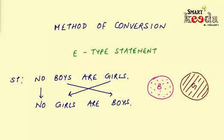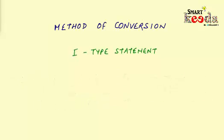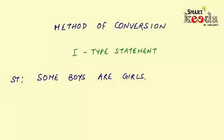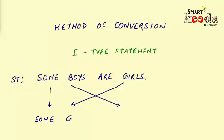Now let's move to the I-type statement. The example is: some boys are girls. If you try to convert it, the quantifier 'some' remains the same and the classes boys and girls get interchanged, giving the definite conclusion: some girls are boys.